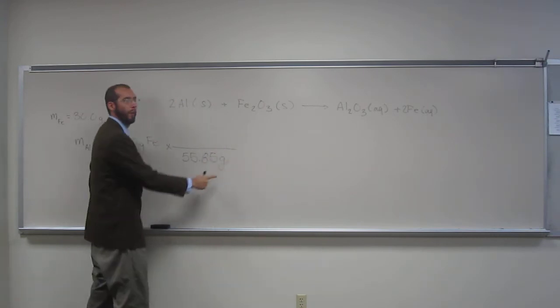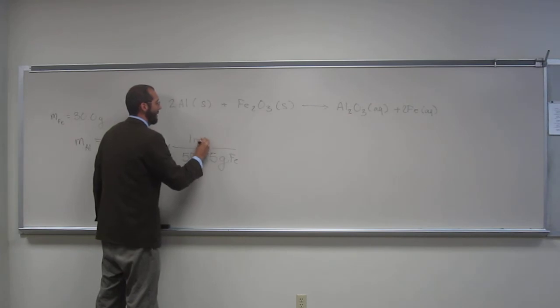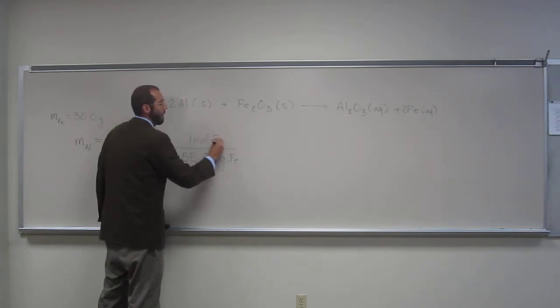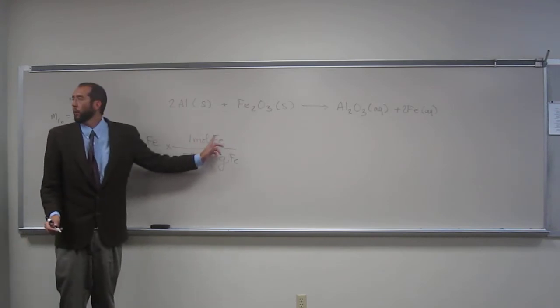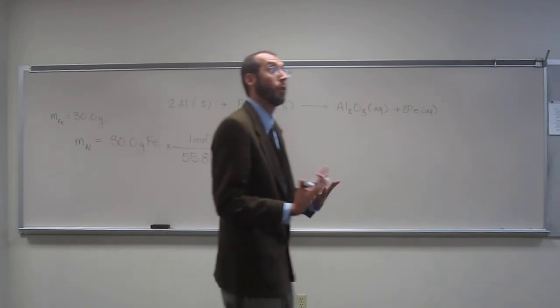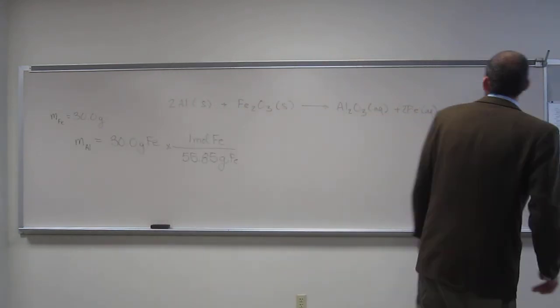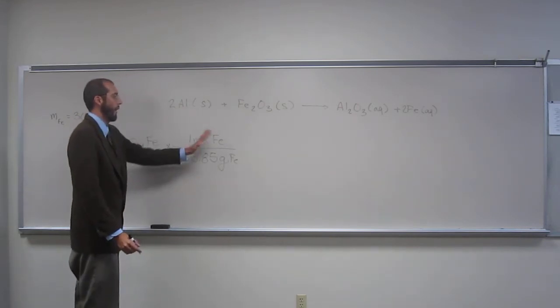So, grams on the bottom, right? Grams of iron. One mole. One mole on the top, very good. And that's going to be one mole of iron, right? It's good for you guys to put the iron there, just kind of in these conversion problems, because we're going to go to aluminum in a second. So we've got to make sure that we're talking about iron or aluminum.